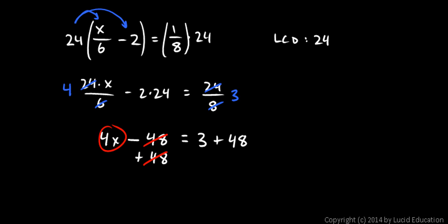That leaves me with 4x on the left, and on the right I have 3 plus 48, which is 51. So 4x equals 51. For the last step, I divide by 4 on both sides. On the left, the 4s cancel out, leaving me with x. On the right I have 51 fourths, so x equals 51 over 4.